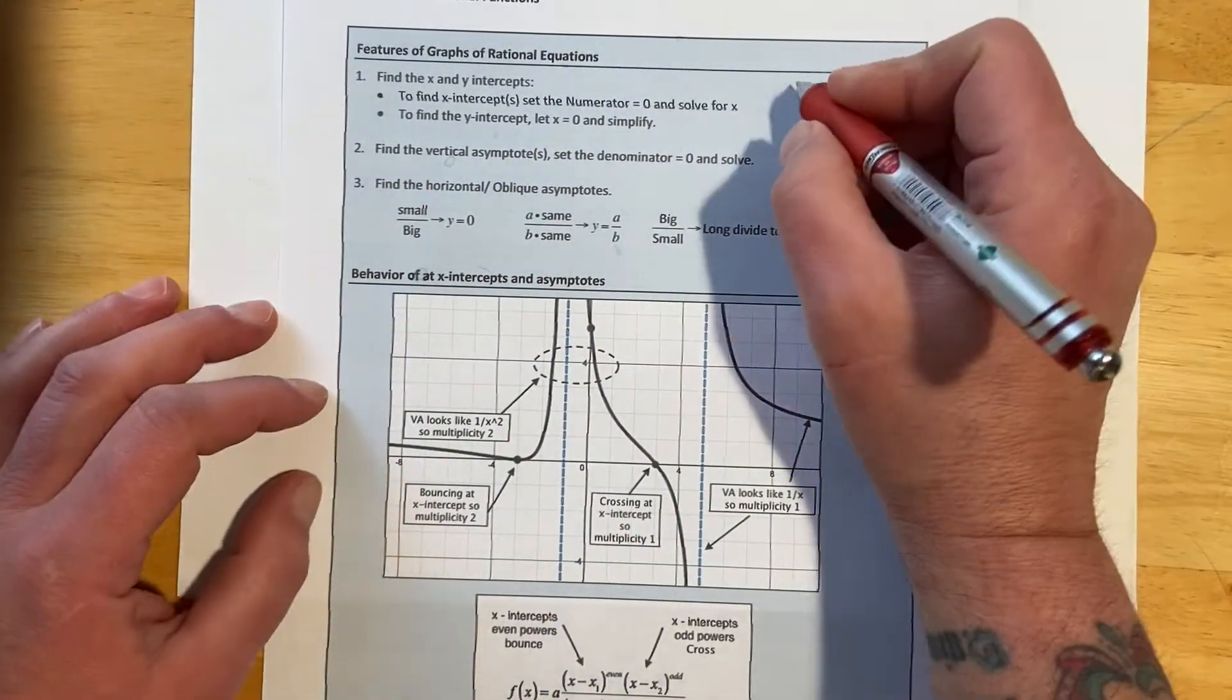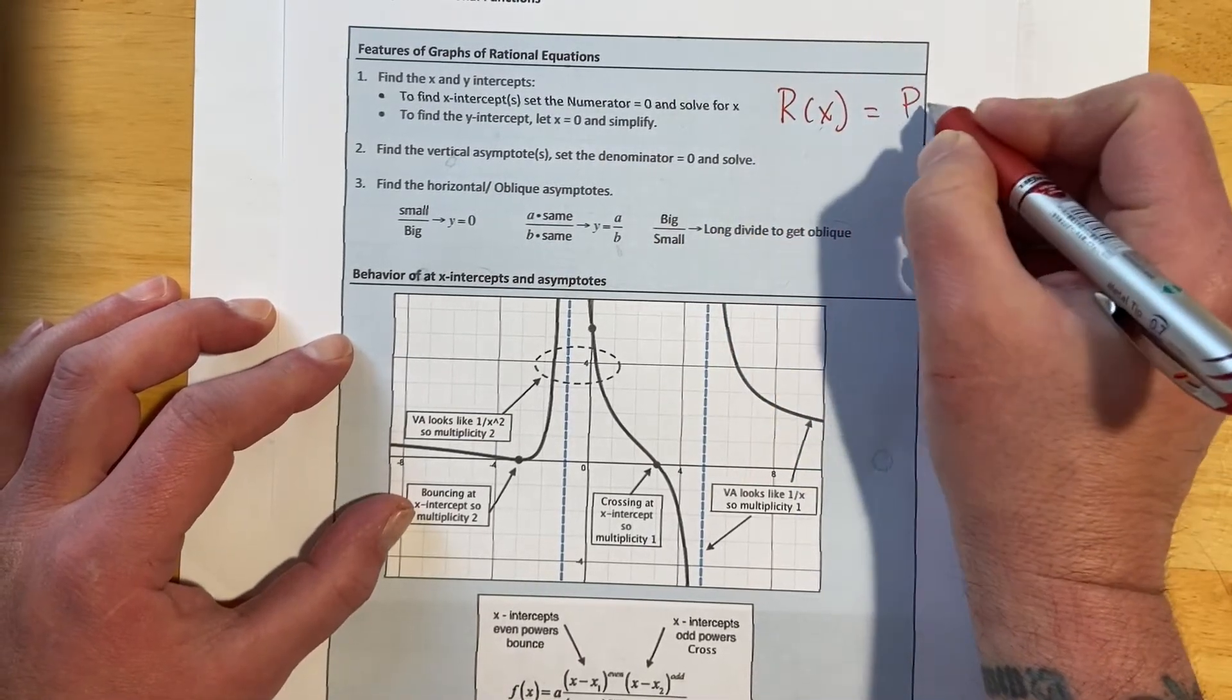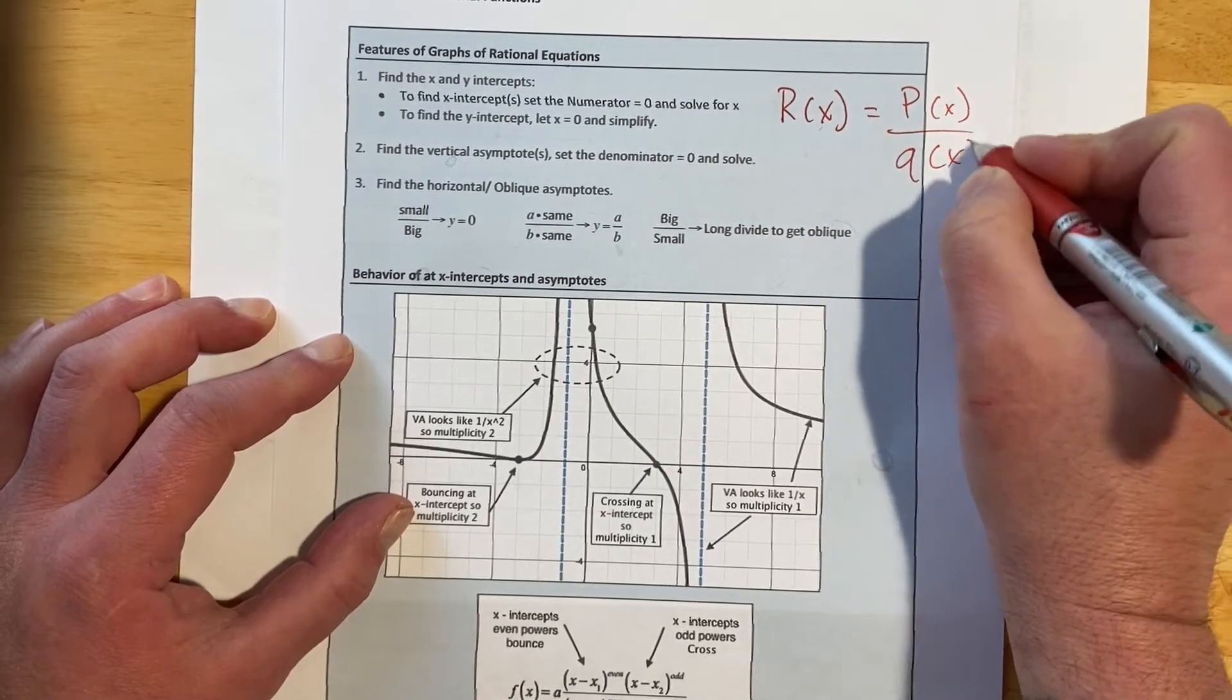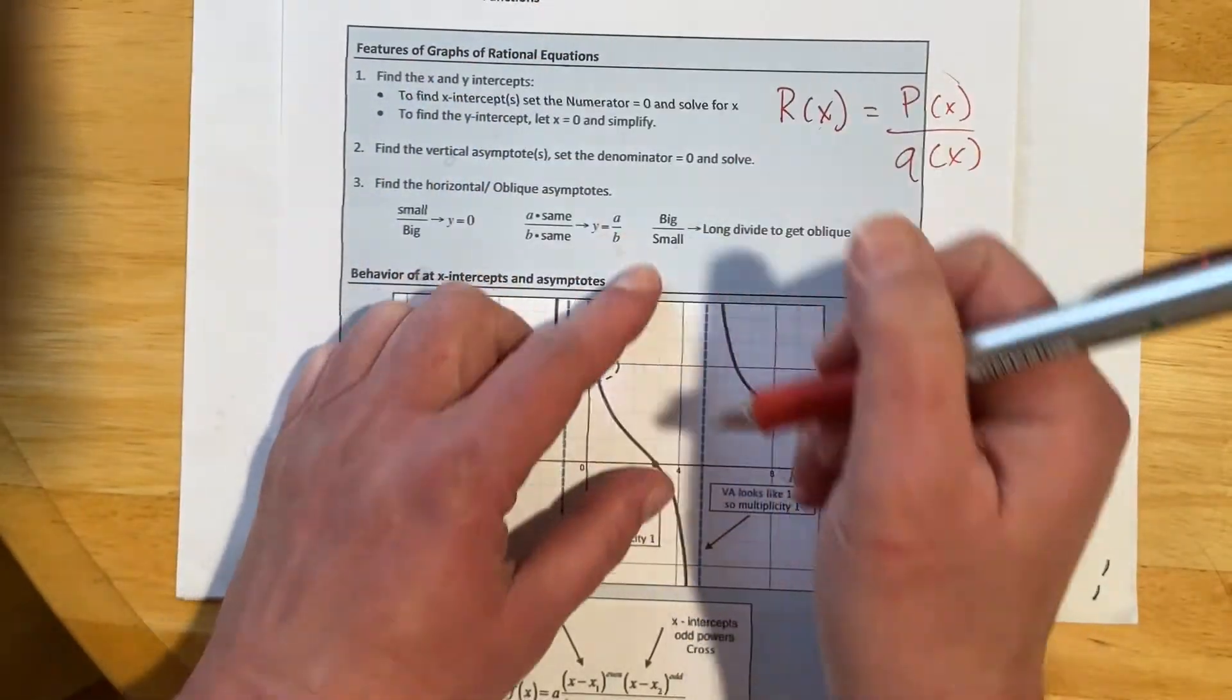So remember, our numerator, we're going to have these rationals P of X over Q of X. So P of X equals 0, numerator equals 0 is going to be X intercepts.